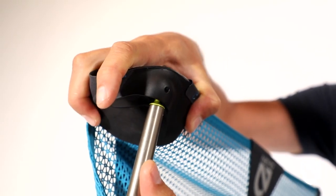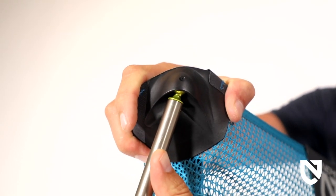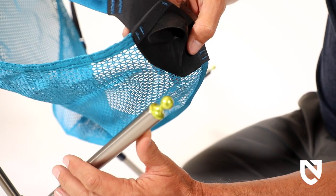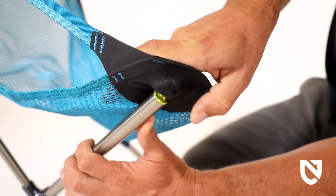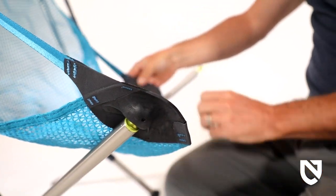Being able to rotate the sockets without detachment is a good visual confirmation. Finish connecting the other corners by snapping the seat support pole ends into their corresponding socket connections.